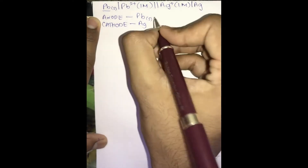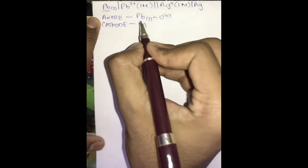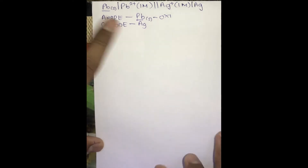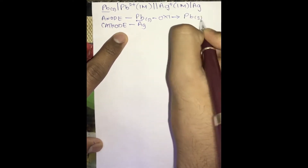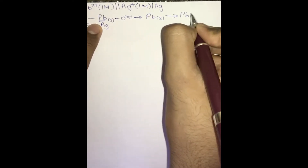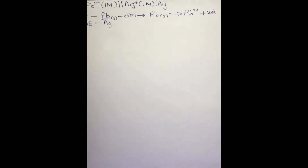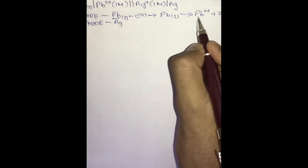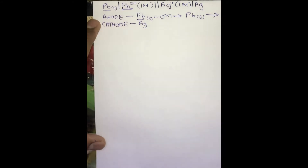As we all know, at the anode there is an oxidation reaction taking place. Oxidation is the loss of electrons. So this Pb atom will lose electrons and turn into Pb²⁺. Therefore Pb²⁺ is written in the center, as we know that ions are always written in the center of the cell formulation.